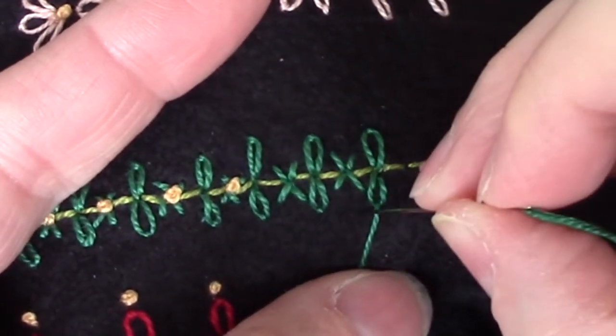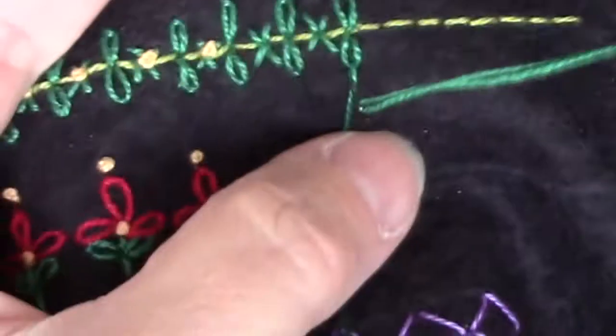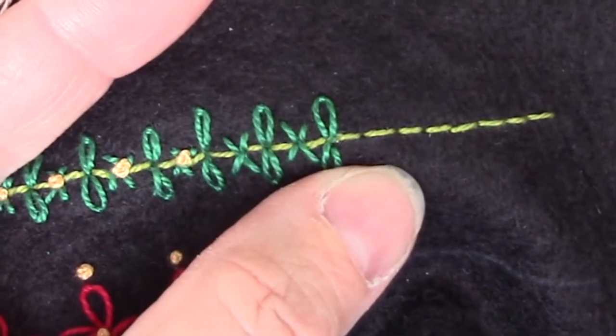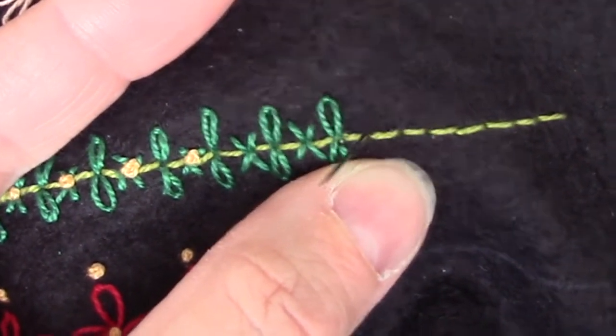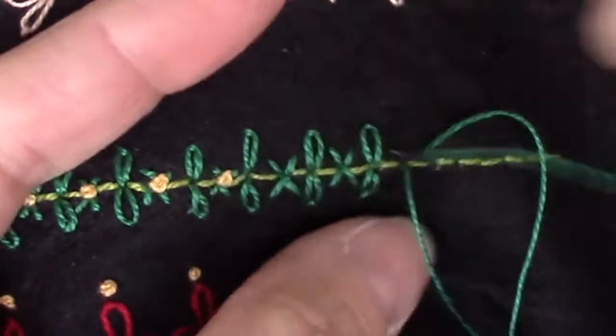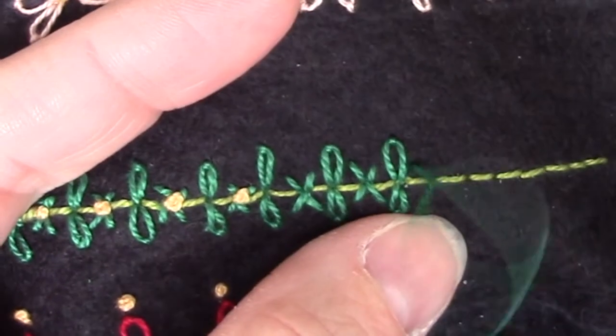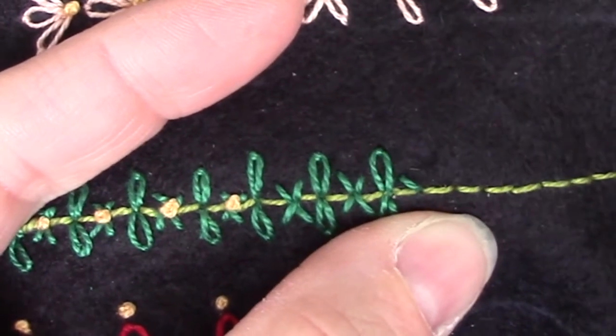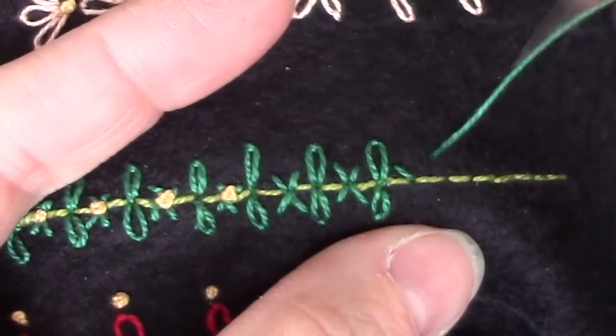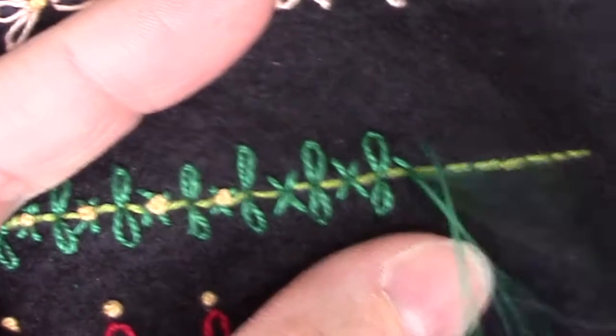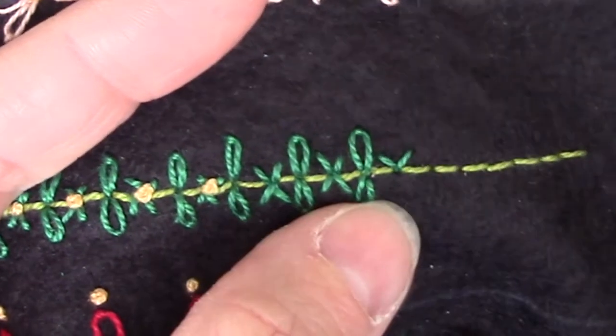And then alternating between those lazy daisies are four straight stitches. And they are basically making an X. You could make it a cross stitch except we're going to come back in those and put in a French knot so it's easier if there's still a hole there. But if you would rather do a cross stitch, that is certainly fine.